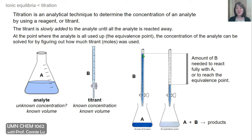By knowing the initial versus the final volume, we can first figure out how many moles of titrant was used, and then back out how many moles of the analyte were originally in the flask. And from knowing the original volume, we can then determine the concentration.